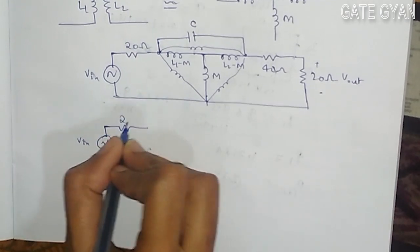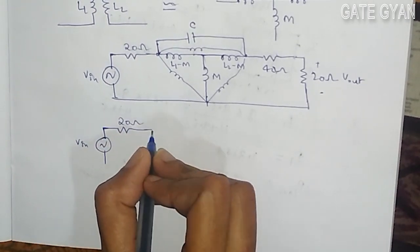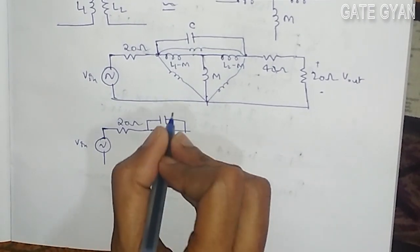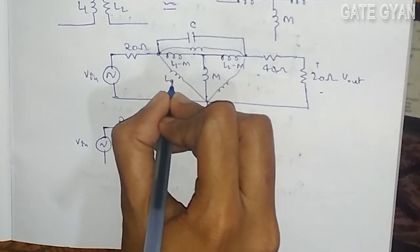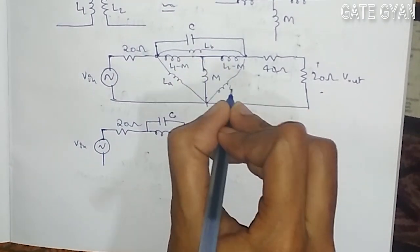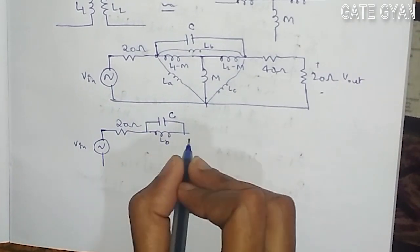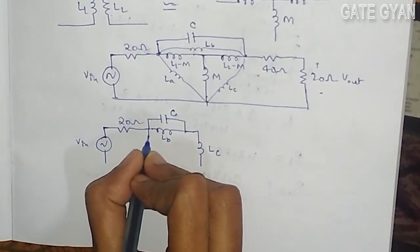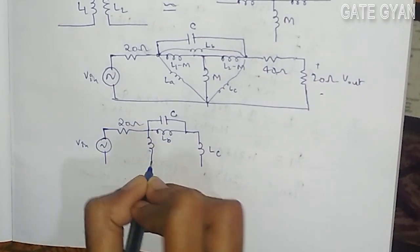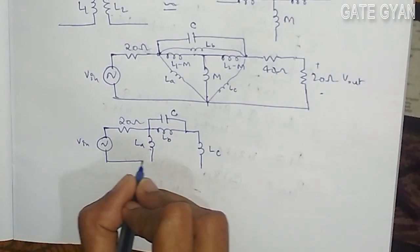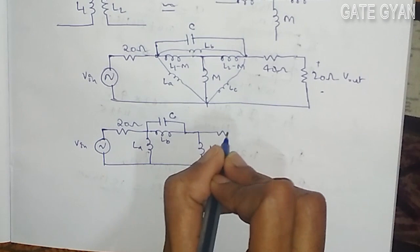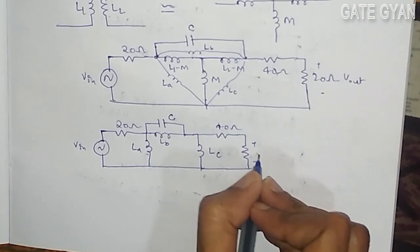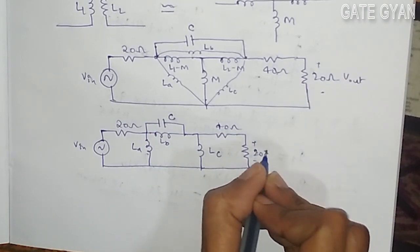This will be 20 ohm, this will be 20 ohm, this will be C. Let this be LA, this be LB and this be LC. So it is going to be LB and C and here it is going to be LA. This is my delta transformation but this value is 40 ohm and 20 ohm. Vout is here.